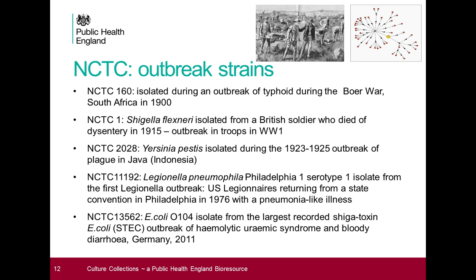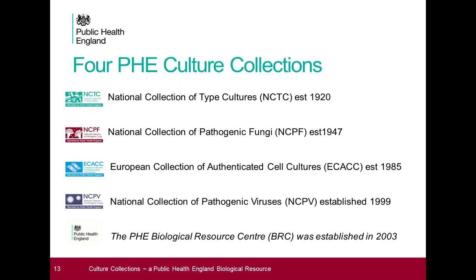Only a few years ago in 2011, NCTC obtained a strain that caused the second largest outbreak on record of foodborne illness attributed to a Shiga toxin-producing E. coli, serotype O104. This affected mostly people in Germany but also caused deaths and serious illness further afield, and was associated with contaminated bean sprouts.